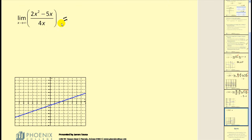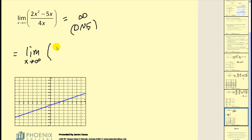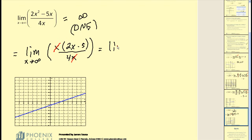Let's look at one more example. Looking at it graphically, as x approaches infinity we move to the right and the function goes up indefinitely, so this limit equals infinity, which does not exist. We can also verify this algebraically: there is a common factor of x in the numerator that simplifies, leaving the limit equal to the limit of 2x minus 5, which again approaches positive infinity, confirming that the limit does not exist.